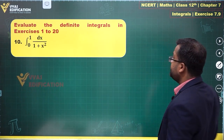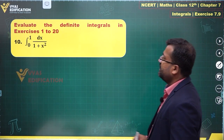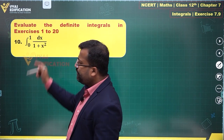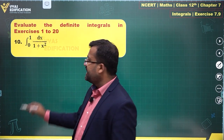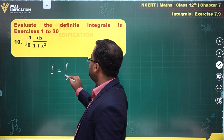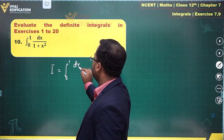Question 10 has the integral from 0 to 1 of dx/(1 + x²). To handle this, we recall that the integral of 1/(1 + x²) is tan inverse x. So we set up the evaluation of tan inverse x from 0 to 1.